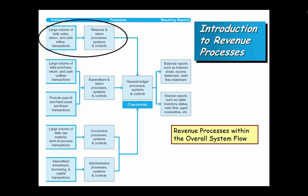You have the revenue process, the expenditure process, conversion processes — which is inventory, converting raw materials to finished goods — and then various administrative processes, finance, and they all feed the general ledger. We're going to talk about the first of those, which is revenue: getting money in.